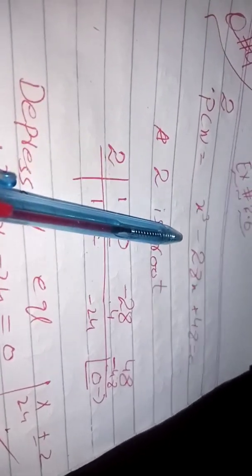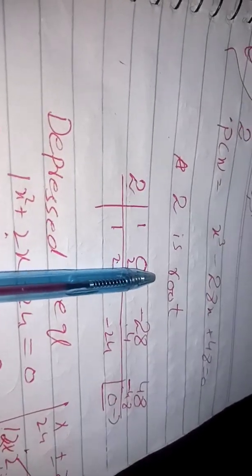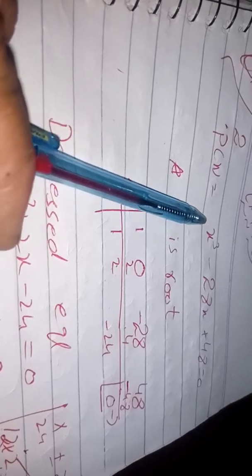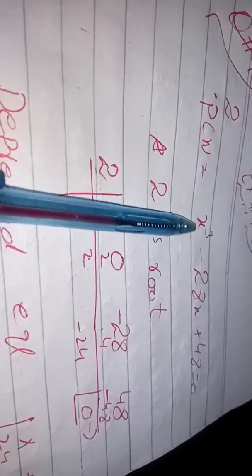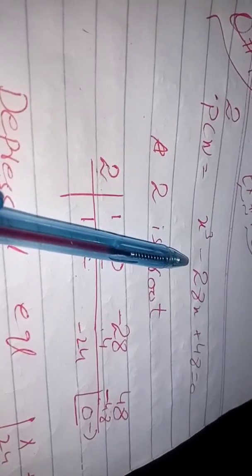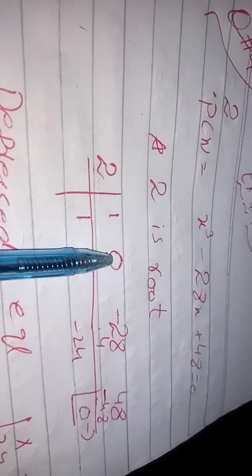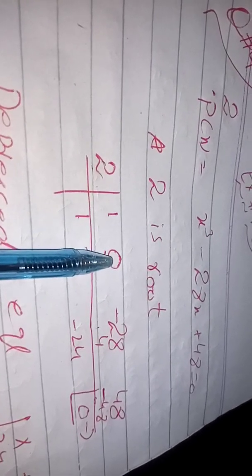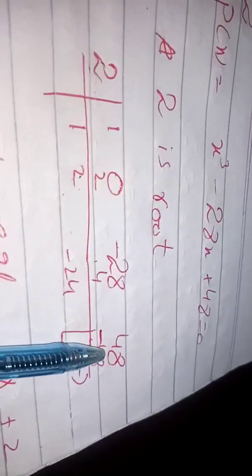The equation is x³ minus 28x plus 48. Since 2 is the root, we write the coefficients. We arrange terms in descending order: x³, then x² — since there is no x² term, its coefficient is 0 — then the coefficient of x, which is minus 28, and the constant term which is 48.